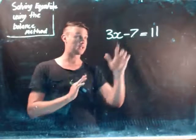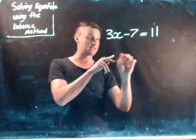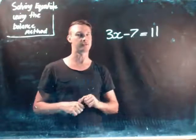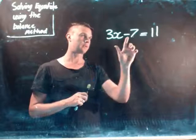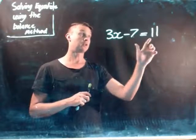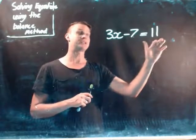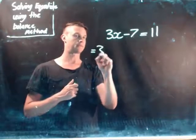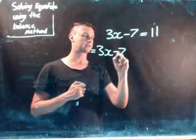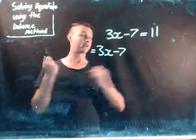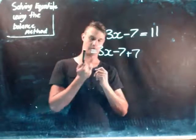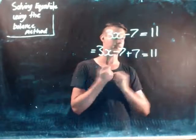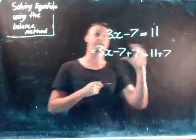What we want at the end is just to have x equals an answer. But we need to do that by balancing and breaking down each side of the equation. So what we're going to do here, if we have minus 7 on this side, we add 7 on this side, we need to add 7 on the other side. So this is what this next step would look like: 3x minus 7 plus 7 equals 11 plus 7.